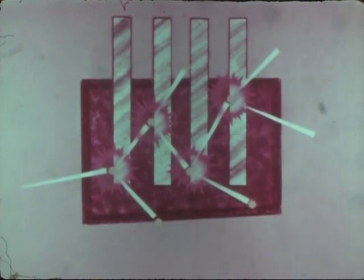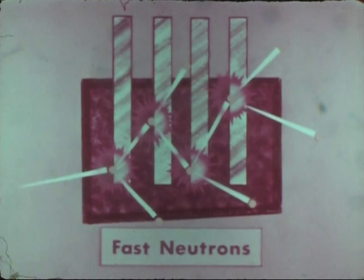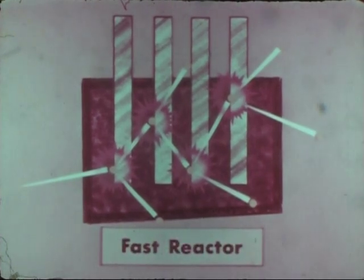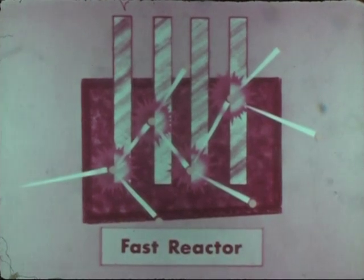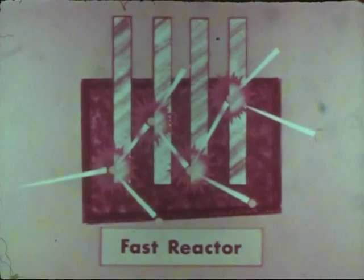A reactor which depends on the capture of high velocity or fast neutrons is called a fast reactor. One advantage of fast reactors is that very few materials seriously absorb fast neutrons, so a wide range of structural materials can be used without absorbing a serious portion of the neutron population.